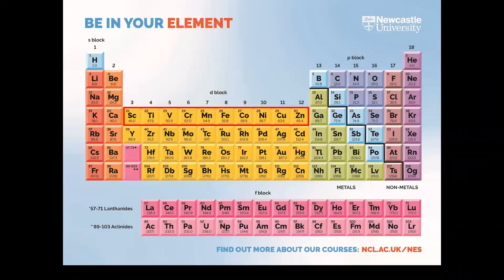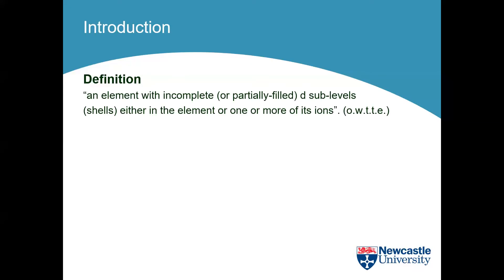At A-level we're concerned not with the whole of the d-block — it's just the first row, and not even all of it. We've already said a transition metal is an element with an incomplete or partially-filled D sub-shell in either the element or one or more of its ions. OWTTE — 'or words to that effect' — appears very regularly in mark schemes. It means you don't need a word-perfect definition, just get the gist right.